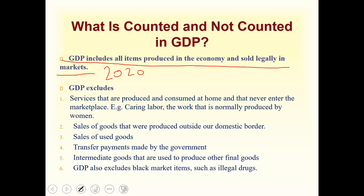We also exclude everything sold in black markets, like illegal drugs or smuggled goods. Finally, goods produced in a previous year are not included. If we are calculating GDP in 2020, we will not include things produced in 2019, because those are included in the GDP of 2019. So in total, there are seven different things not included in GDP.